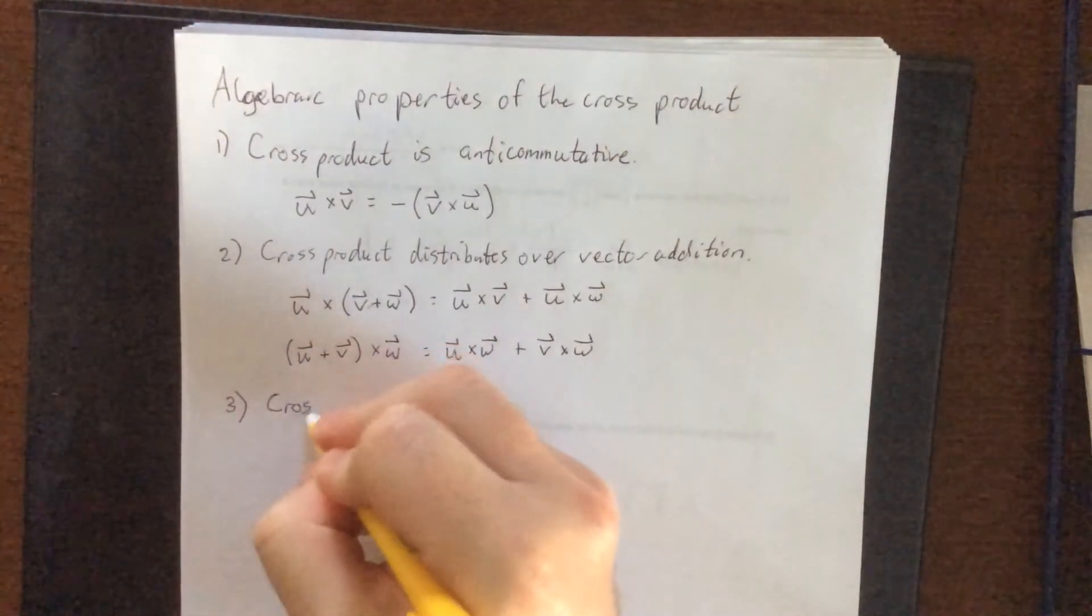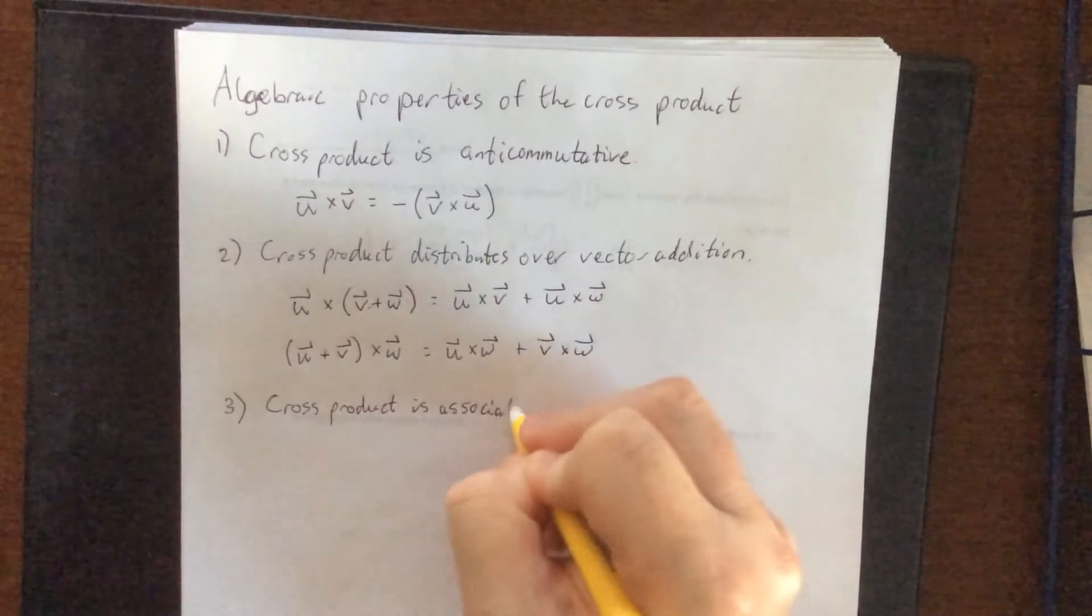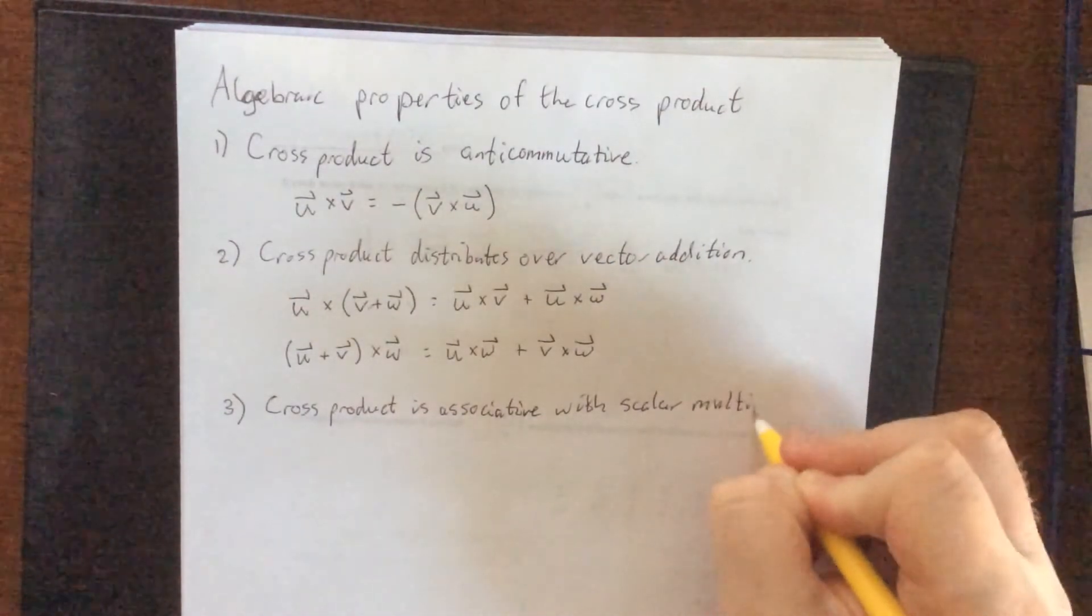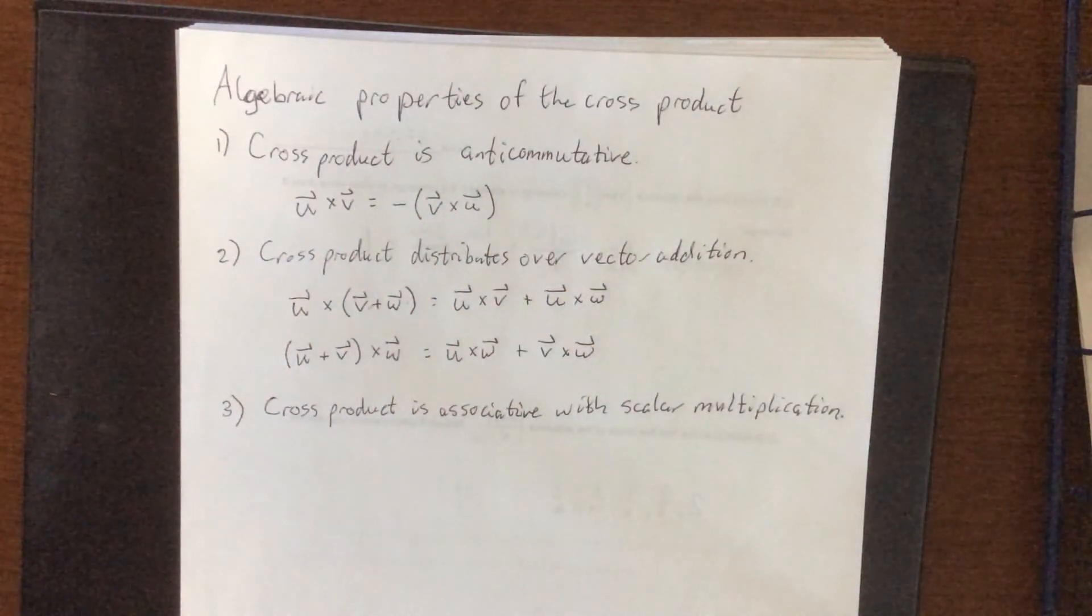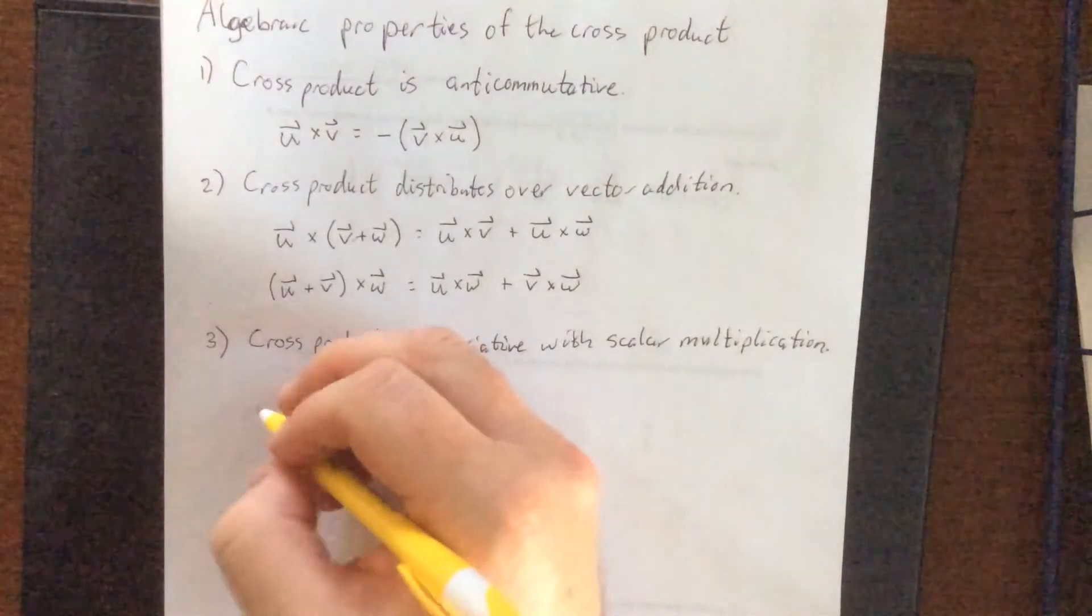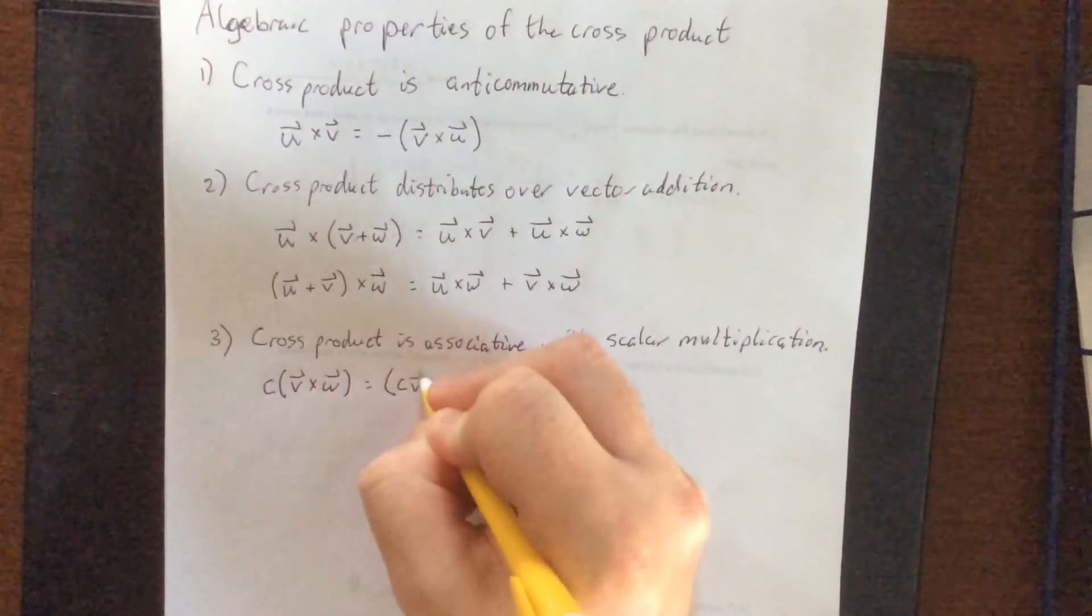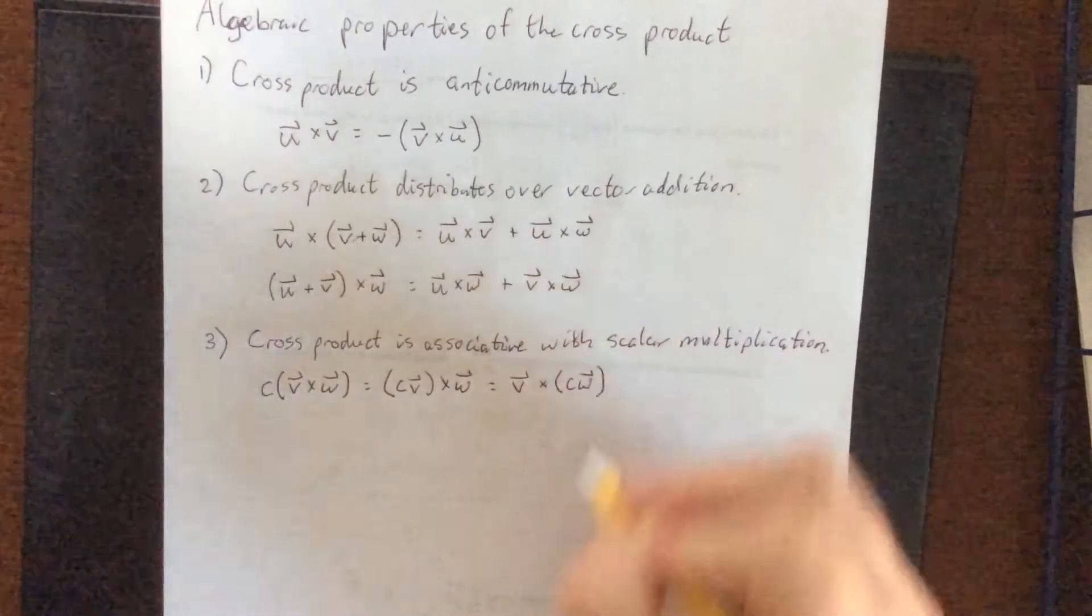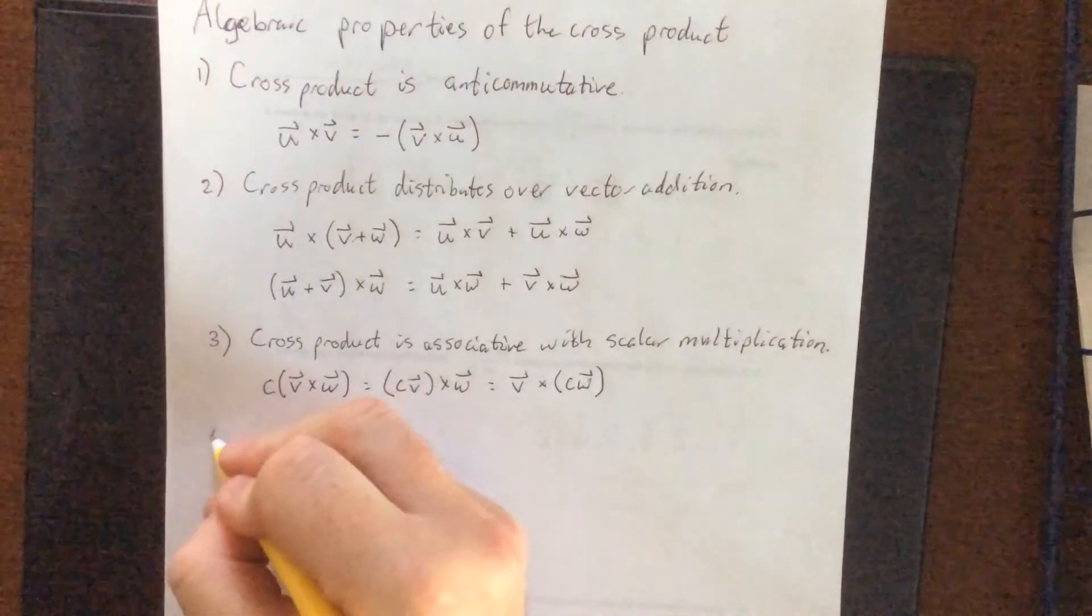The cross product is associative with scalar multiplication. Now again, this one is going to be fairly straightforward due to the fact that if I were to multiply one of these two vectors by a scalar, then that would simply multiply one of the rows of the determinant by that scalar as well. So if I do a scalar multiplication times the cross product of two vectors, I could do the scalar multiplication first and I could do it to either of the given vectors.